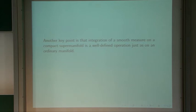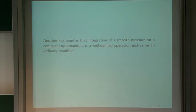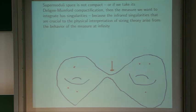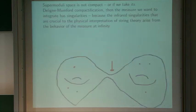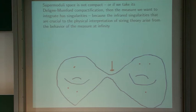This fact was not much used in the literature on superstring perturbation theory, which tried to avoid expressing things in terms of that fact — although it's a simple and general fact. But it's not enough, because it refers to a smooth measure on a compact supermanifold. In superstring theory things are not as nice as that: supermoduli space isn't compact. Or we can use the Deligne-Mumford compactification and say it's compact, but then the measure we want to integrate has singularities.